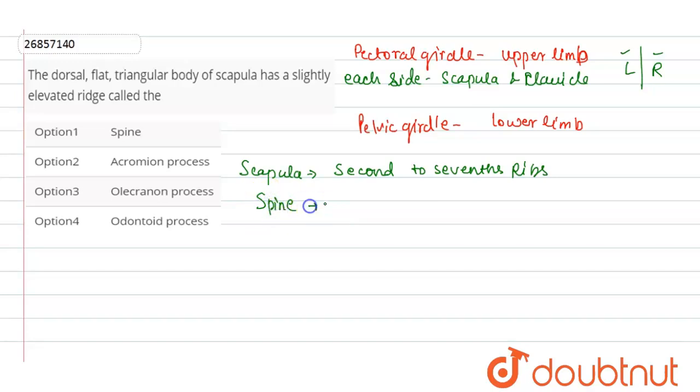The spine projects like a flat structure. There is an expanded process present in this area - what do we call it? The acromion process. The elevated expanded process is the acromion process and it will be articulated with the clavicle. The elevated ridge portion is called the spine.